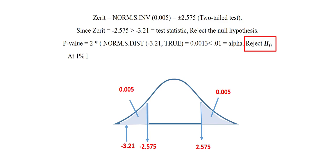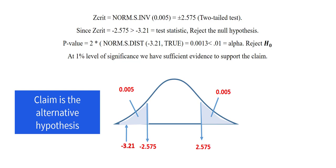We can thus conclude that at 1% level of significance we have sufficient evidence to support the claim. Again the claim in this case is my alternative hypothesis.